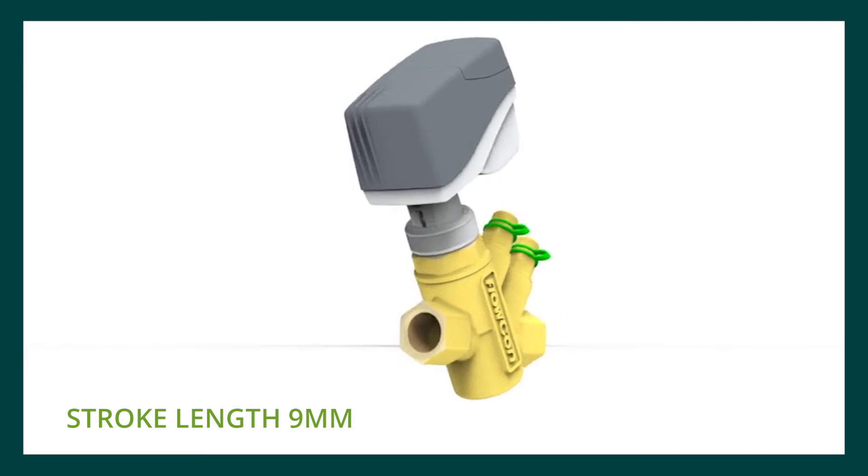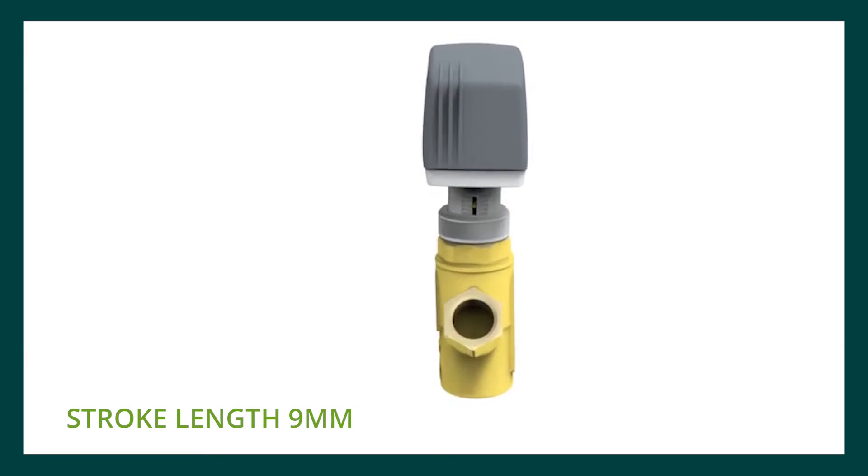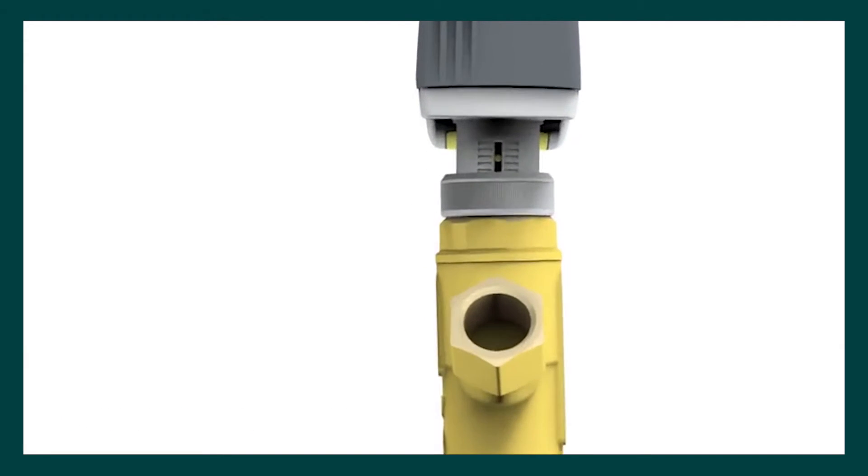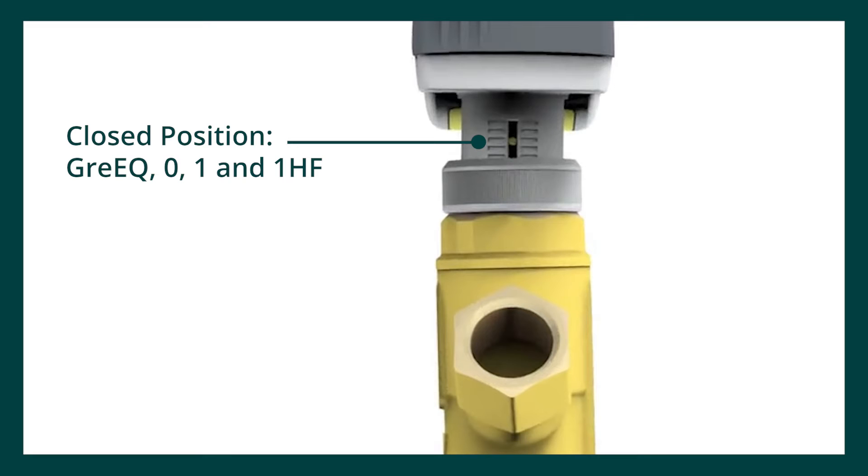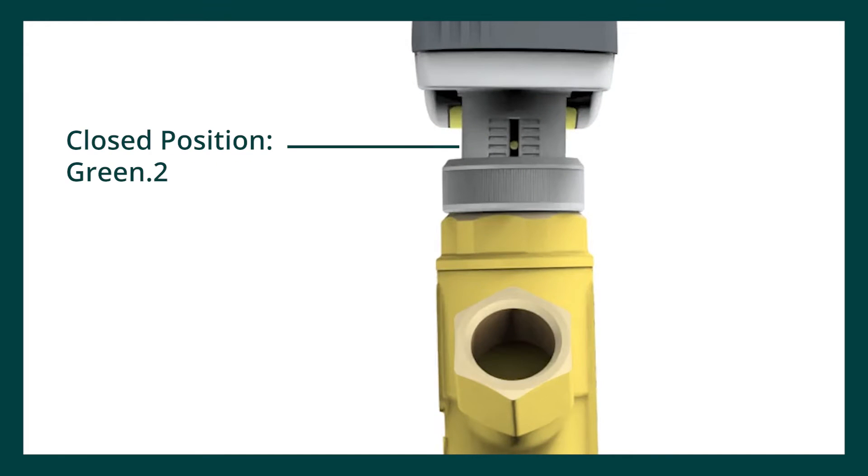The actuator has a stroke length of 9mm and will self-calibrate to the PICV's closed position when the power is turned on. The black GRP pin located on the actuator neck will indicate when the actuator is fully closed. The closed position is different for the green EQ, 0, 1 and 1HF compared to the green 0.2.